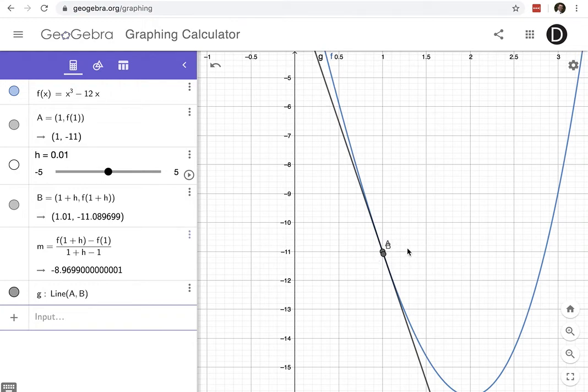And now these two points are really close. And notice that the value of the slope, it's no longer negative 8.69, it's now negative 8.9699. And so I've moved away from that old value.